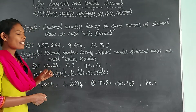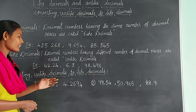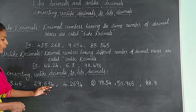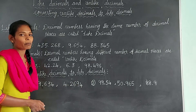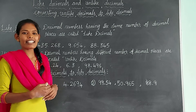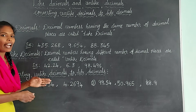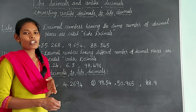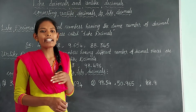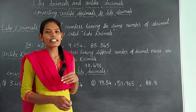Now let us see how to convert unlike decimals to like decimals. Here we have some examples: 3.46, 29.634, and 4.2694. By observing these decimals, we can clearly say that these are unlike decimals, because these decimal numbers have different decimal places. We can convert unlike decimals to like decimals by adding zeros to the extreme right of the decimal number.